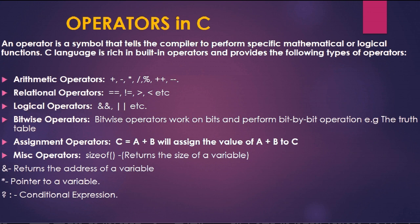The fifth type is the assignment operator. Assignment operators are used to assign a value to a variable. For example, if a is 10 and b is 20, then 10 plus 20 equals 30 will be assigned to c. This is how the assignment operator is used.